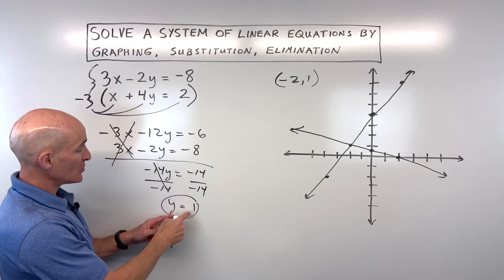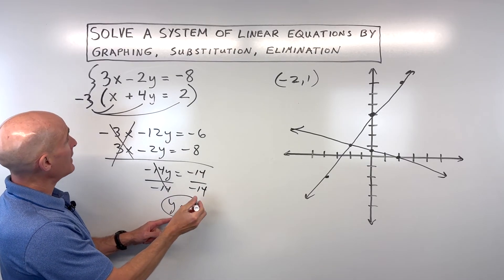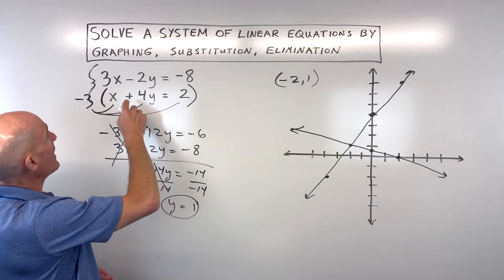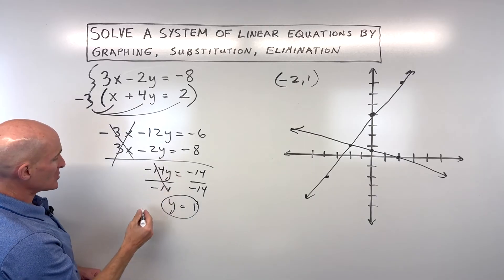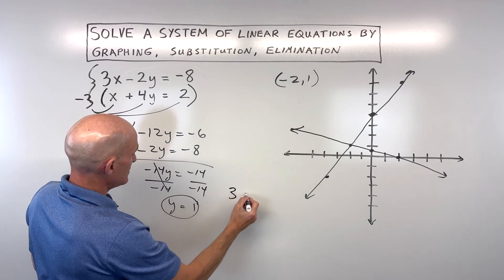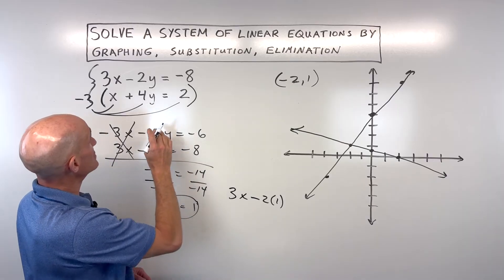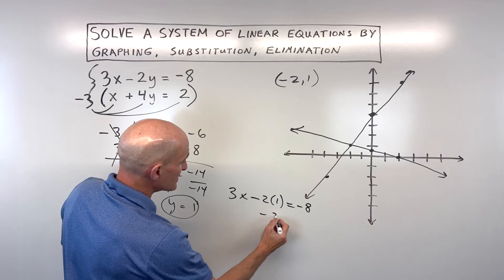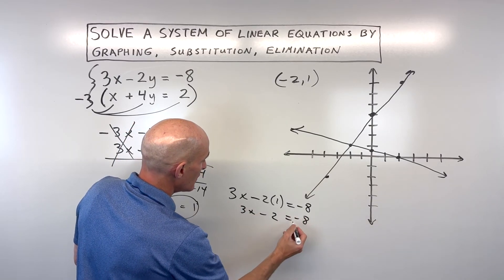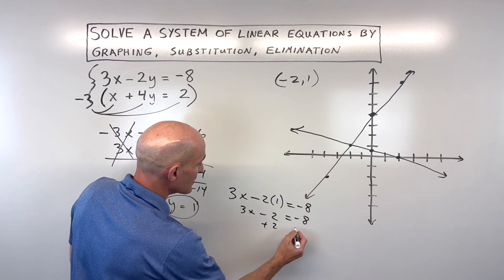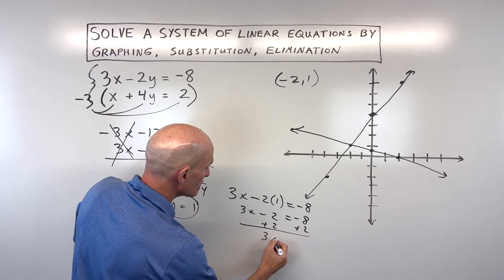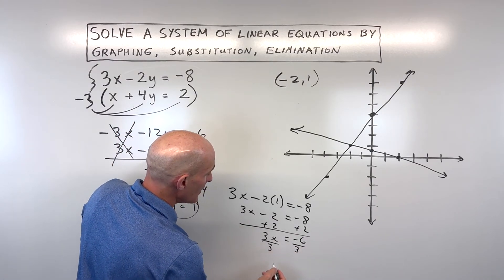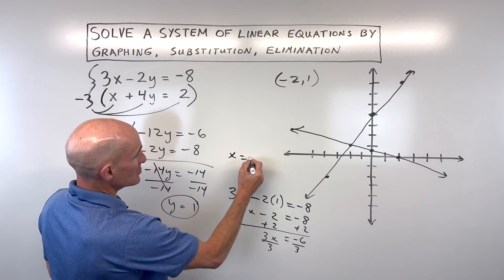Now, in order to solve for x, you can take this y equals 1, and you can plug it into any one of these equations for y and solve for x. So, I'm just going to go back up to, let's maybe do this top equation. So, we have 3 times x minus 2 times y, which is equal to 1, is equal to negative 8. And let's see, negative 2 times 1 is negative 2. Let's add 2 to both sides to get the numbers on one side, variables on the other. We get 3x equals negative 6. And if we divide both sides by 3, you can see that x is coming out to negative 2.